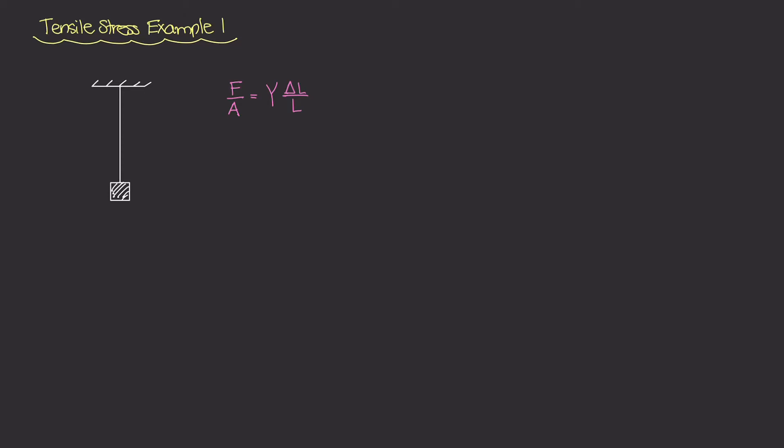In this example, we have this wire that's constrained to a ceiling here at the top, and at the end of the wire at the bottom there's this piece of block. It's just a piece of mass that's hanging on this wire.